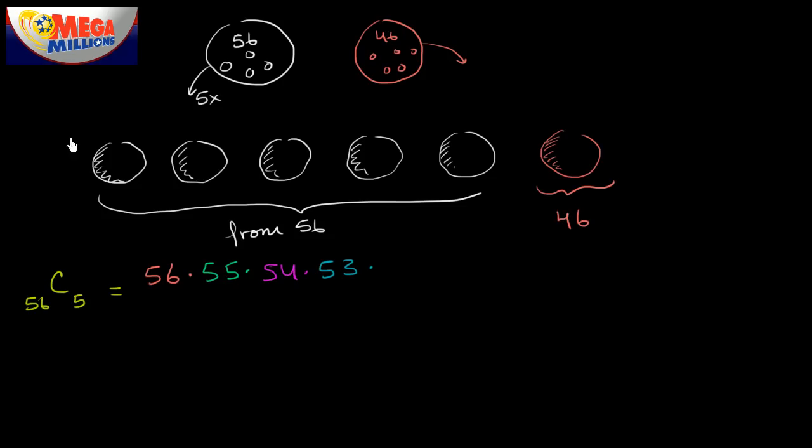And then the ball after that, there's going to be 52 possibilities. 52, because I've already picked four balls out of that. Now this number right over here, when you multiply it out, this is the number of permutations if I cared about order.